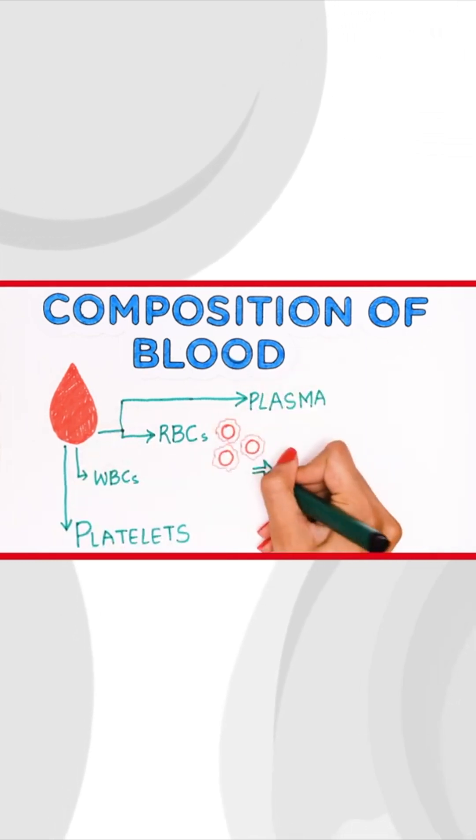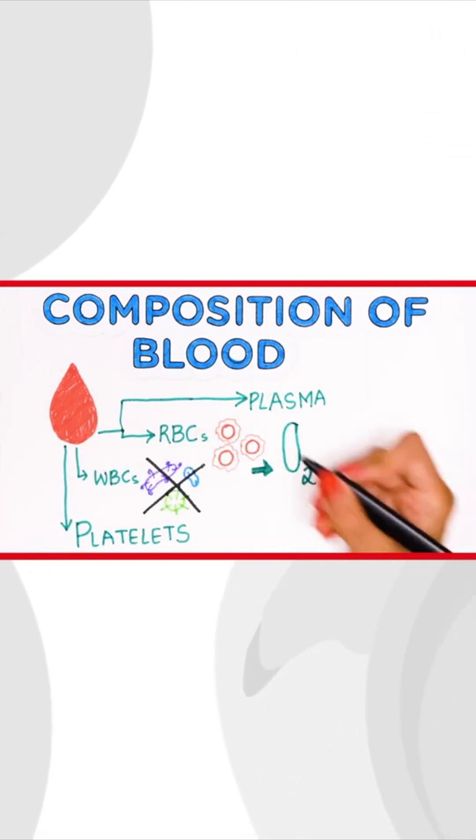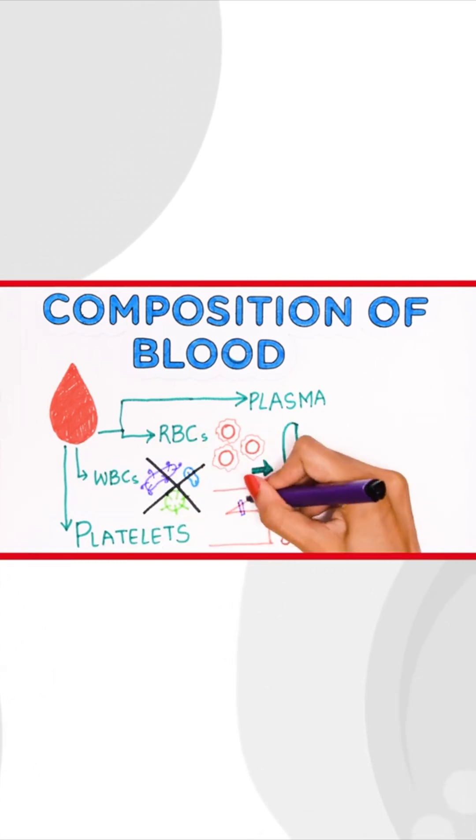The RBCs are responsible for oxygenating your body. The WBCs prevent infections. Platelets help in the formation of clots to prevent excessive bleeding when one is injured.